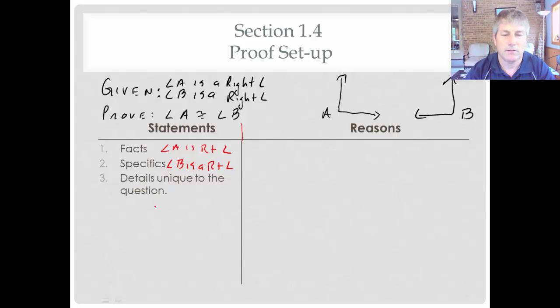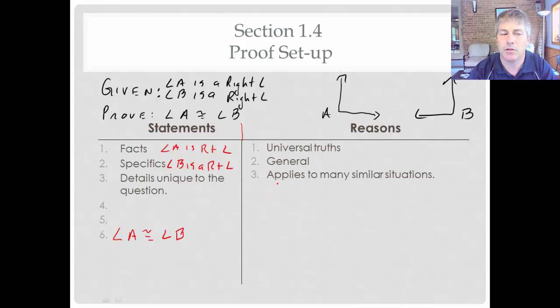Now our reasons. Well, I think I continue numbering here. So we're going to work our way down, step four, step five, step six. And then finally at the end, we might prove that angle A is congruent to angle B. Our reasons on the right hand side, those are going to be our universal truths. They're going to apply to many situations. We're not going to refer to a specific angle or a specific measure or something on this right hand side. These are going to be more general. It's going to apply to many similar situations.